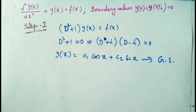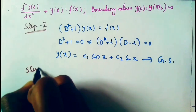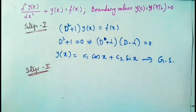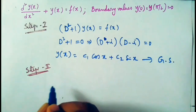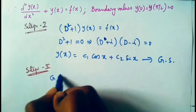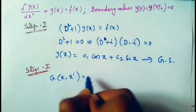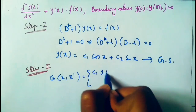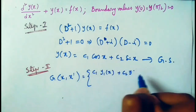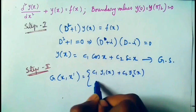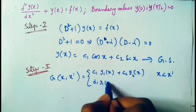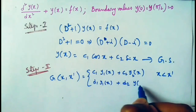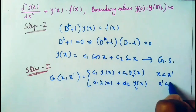Step two: write the general form of the solution as the Green's function. G(x, x') = c1·y1(x) + c2·y2(x) for x less than x-dash, and d1·y1(x) + d2·y2(x) for x-dash less than x.